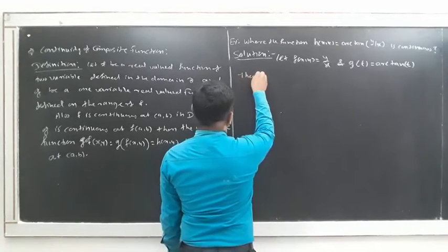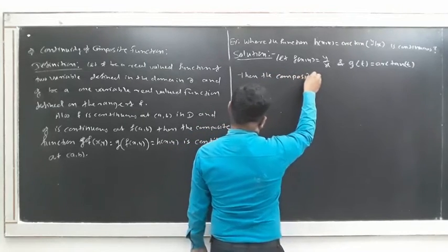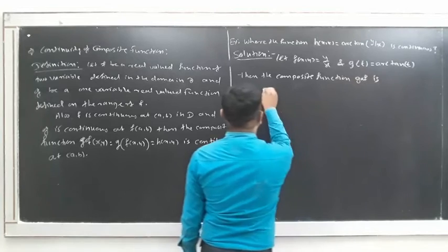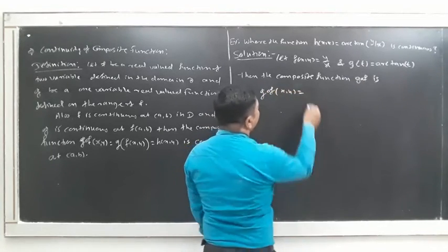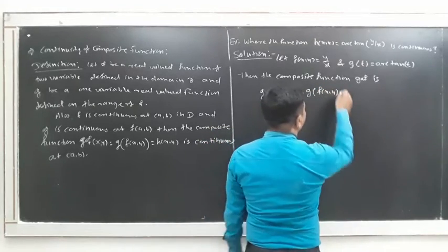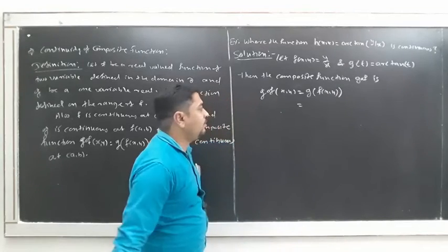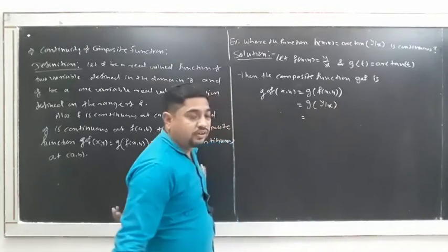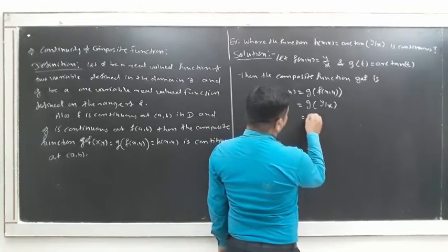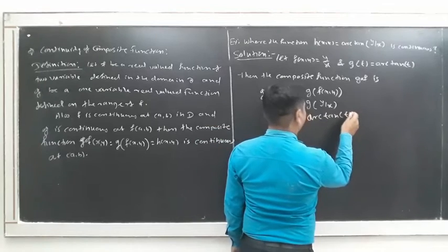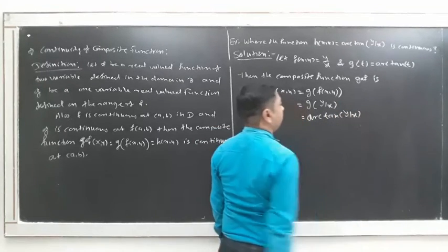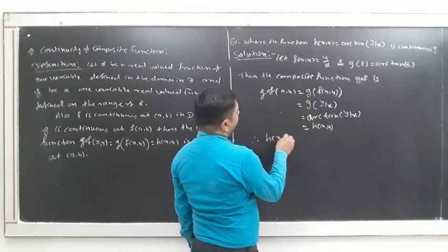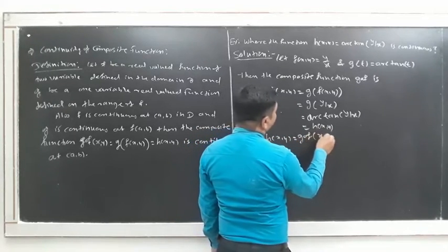Then the composite function g of f is: g(f(x, y)) = g(y/x) = arctan(y/x), which is nothing but h(x, y). Therefore, h(x, y) is a composite function of g and f. So now we check where f is continuous and where g is continuous.